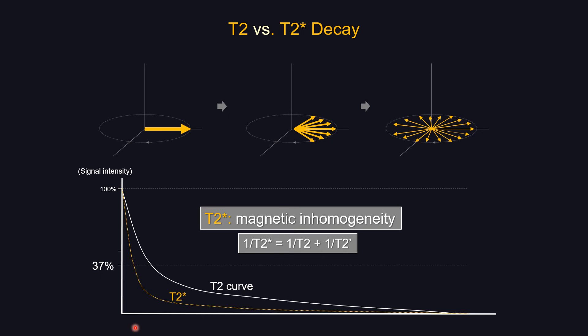What causes this faster T2 star decay? It comes from factors that make the main magnetic field inhomogeneous — imperfections of the magnet itself, field distortions from metal, air, or variable sample thickness. These distortions cause protons to decay faster than their intrinsic spin-to-spin interactions alone. Therefore, T2 is constant regardless of which machine you use, but T2 star differs between machines. Importantly, T2 decay cannot be altered or reversed, but T2 star can be temporarily shifted back toward the T2 curve using a spin-echo with a 180-degree RF pulse.